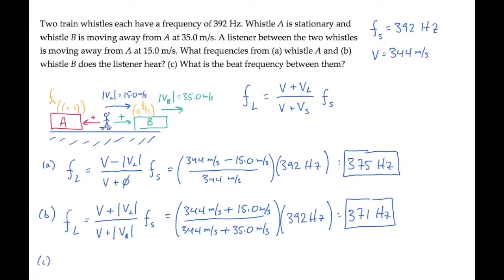Part C asks us for the beat frequency between these two. That's the magnitude of the difference between the frequencies. So we can label these frequency heard by the listener from train A and B, and subtract them to see that the beat frequency is 4 Hz.